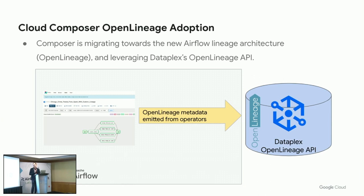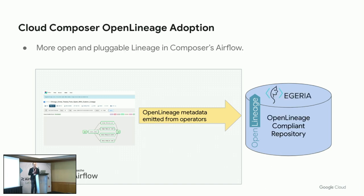Composer will not stay behind — we are working towards migrating to that approach. Since Dataplex, our metadata catalog of choice, already supports OpenLineage, we want to expose metadata from Airflow through the OpenLineage framework. But we are not vendor-locking you in. If you prefer some other standard or technology, Composer will be OpenLineage compliant, so whatever supports OpenLineage can be leveraged. That gives you a very open and pluggable environment, giving you the freedom to choose the technology most appropriate for your use case.